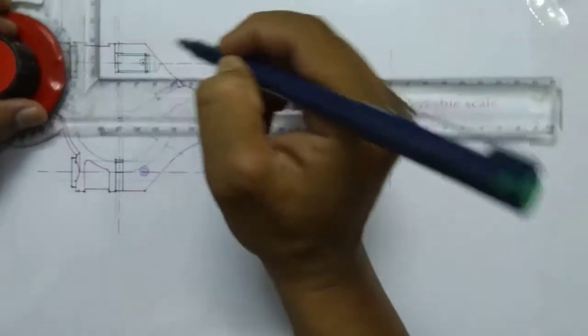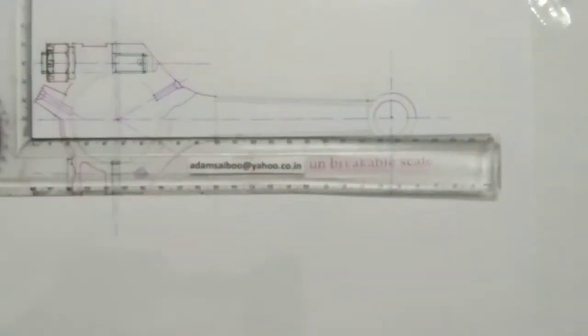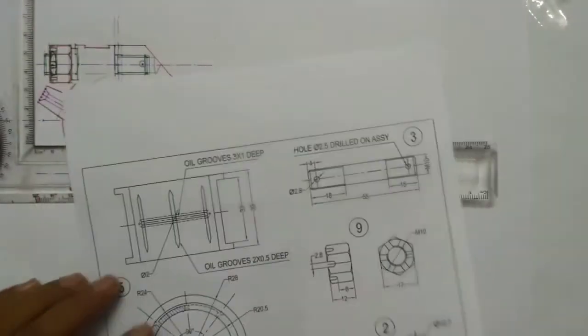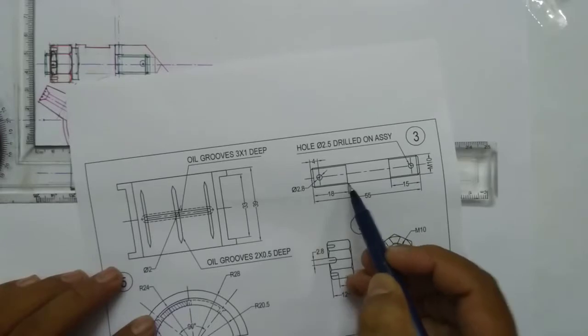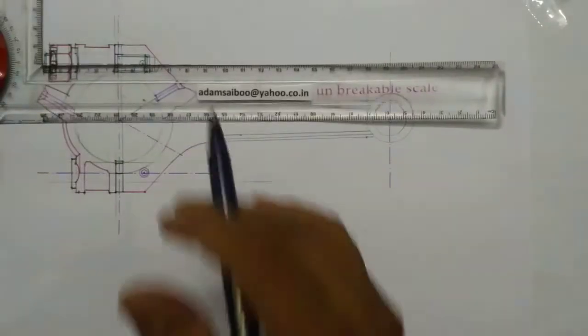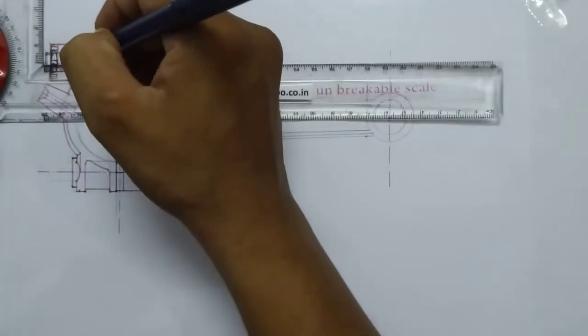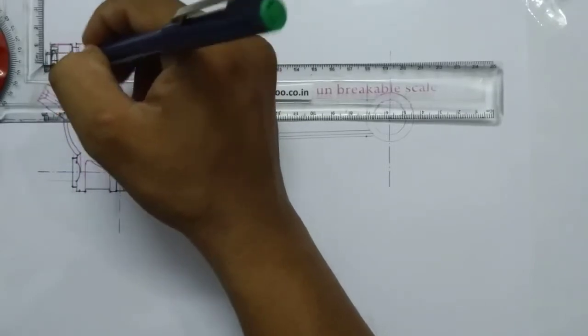This is a threaded portion. This distance is 18mm, the whole threaded portion will hide here.